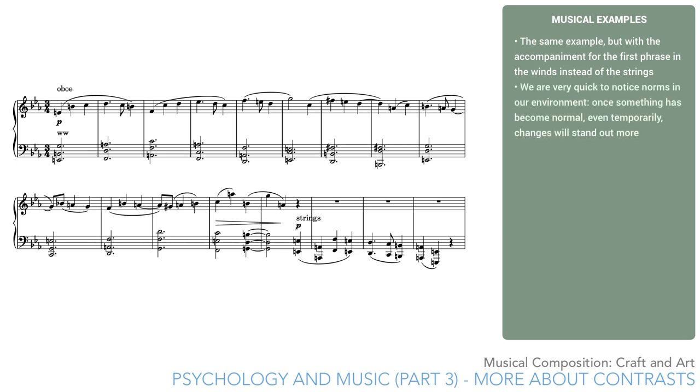This is because we're very quick to notice norms in our environment. Once something becomes normal, even temporarily, changes stand out more. This suggests a very important principle in planning musical forms: plan the contrasts. And this also implies planning what you will not do.